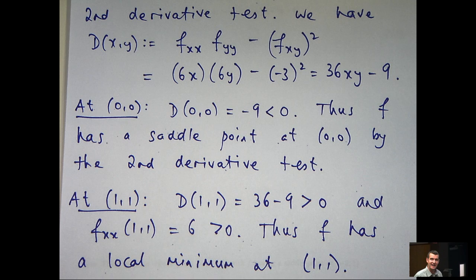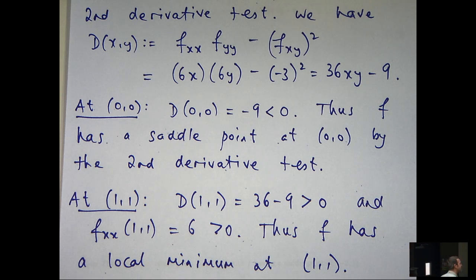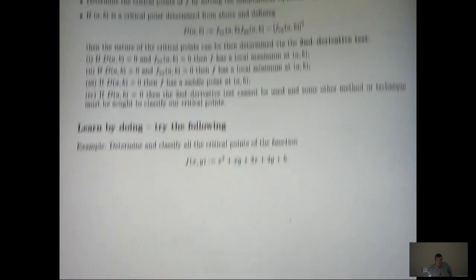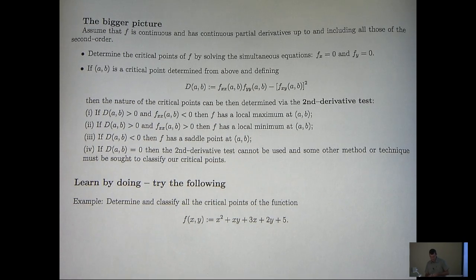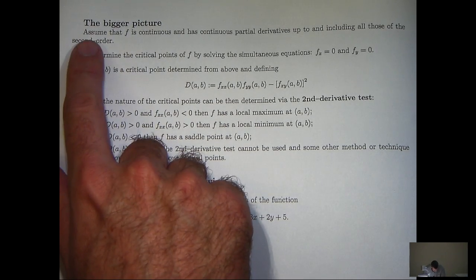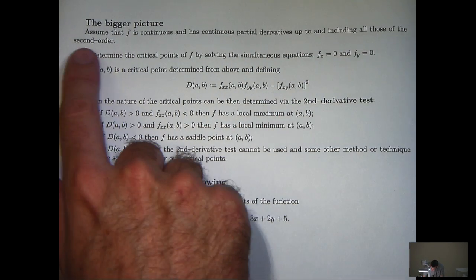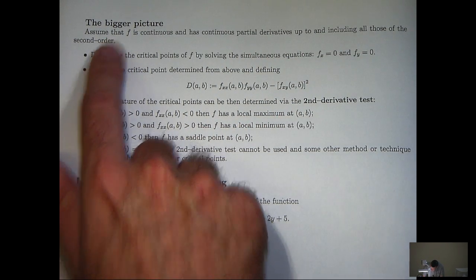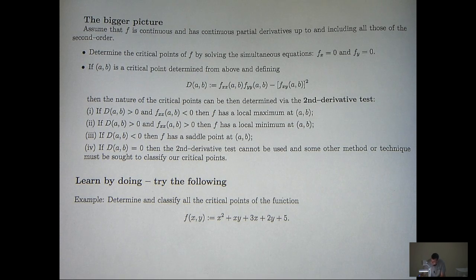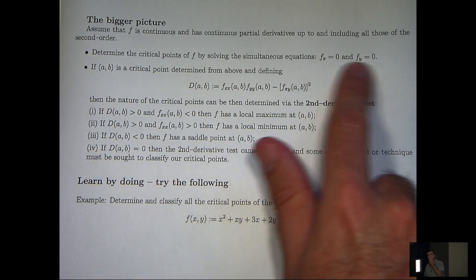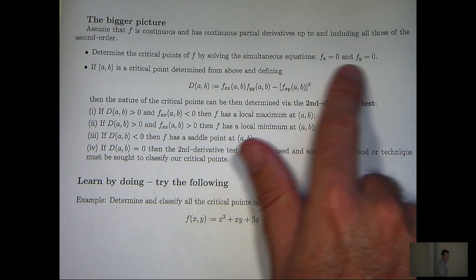So that's our question finished. We've located our critical points of f, we've classified them using the second derivative test. So let's look at the bigger picture here. What are some ideas that you can use in general? Well assume that f is continuous and has continuous partial derivatives up to and including all of those of the second order. Now this assumption was automatically satisfied by the example we looked at because it was a polynomial.